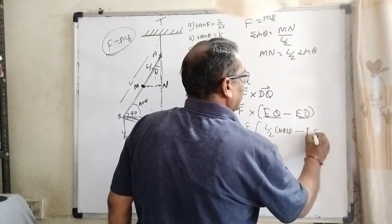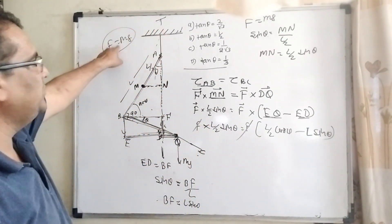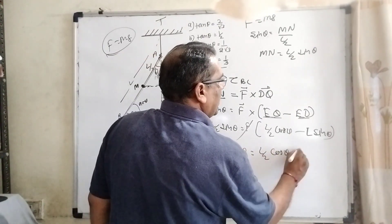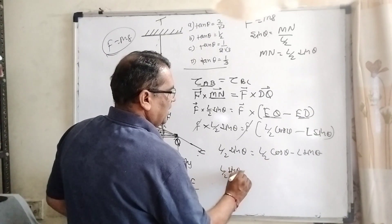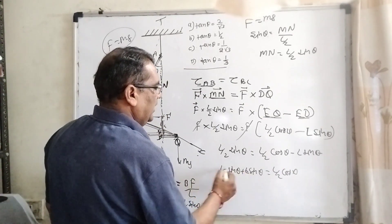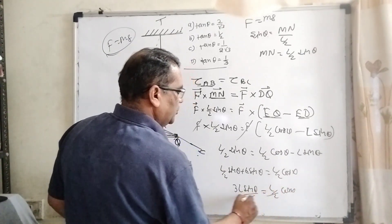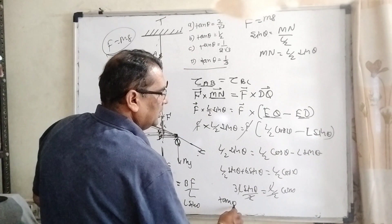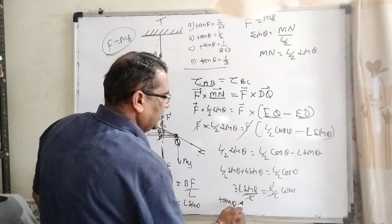Now F cancel here, F is already mg. L by 2 sin theta equal to L by 2 cos theta minus L sin theta. L sin theta is transposing to the left side. Then L by 2 sin theta plus L sin theta equal to L by 2 cos theta. Taking the LCM, 2L and L, 3L sin theta upon 2 equal to L by 2 cos theta. 2, 2 cancel out, L, L cancel out, and tan theta by cos theta put in the denominator of this portion left part and 1 by 3. So tan theta equal to 1 by 3. D option is correct.